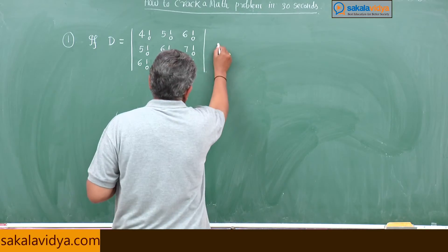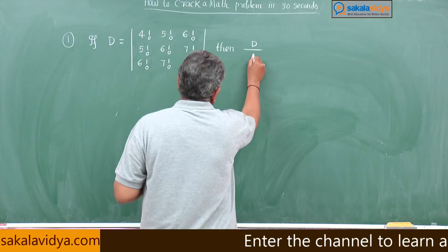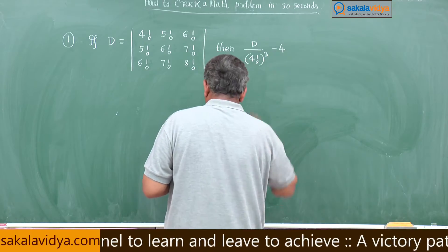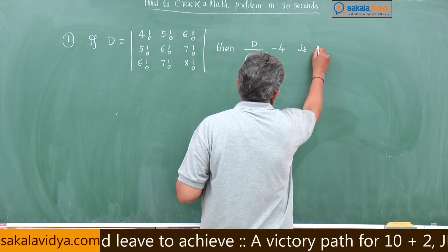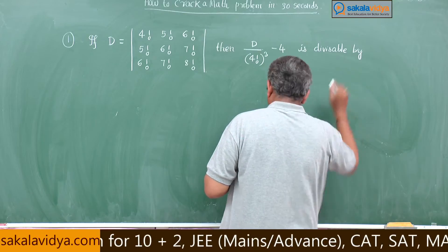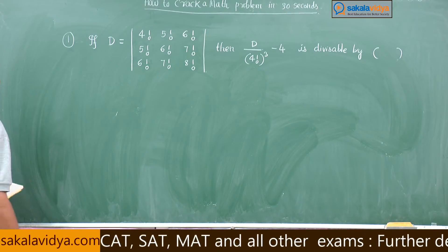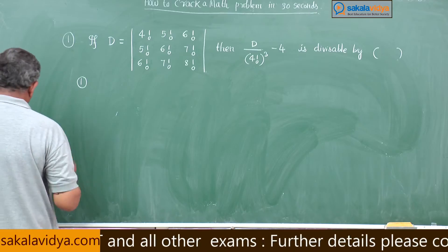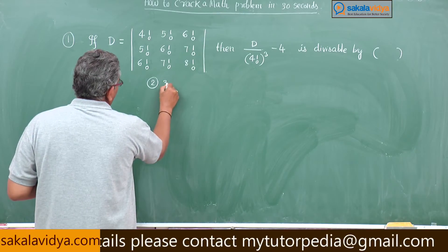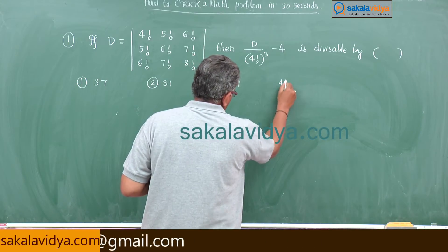Then D divided by 4 factorial cubed minus 4 is divisible by. First option 37, 2nd option 31, 3rd option 29, 4th option 23.